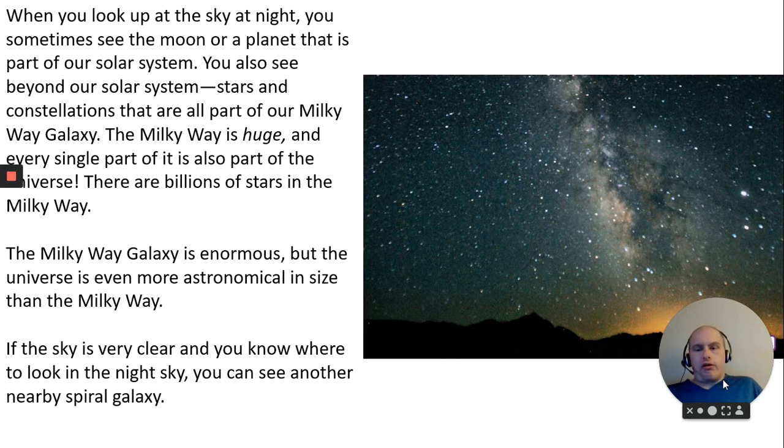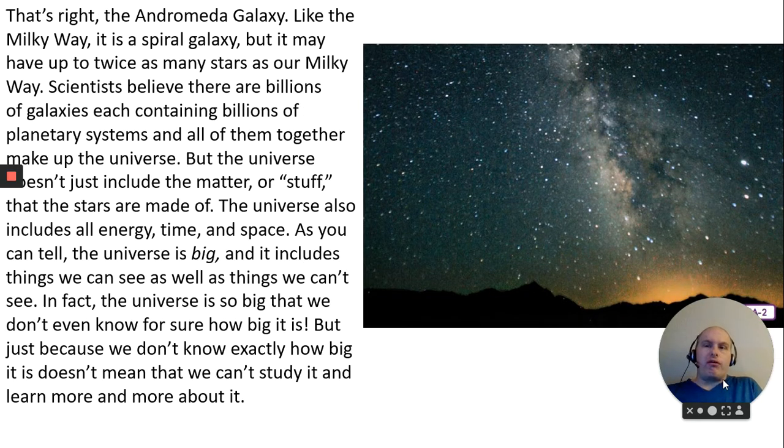If the sky is very clear, you know where to look in the night sky. You can see another nearby spiral galaxy. That's right, the Andromeda galaxy. Like the Milky Way, it is a spiral galaxy. But it may have up to twice as many stars as our Milky Way. Scientists believe there are billions of galaxies, each containing billions of planetary systems. All of them together make up the universe.